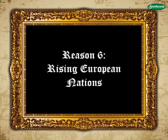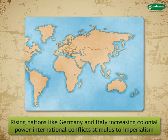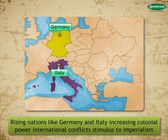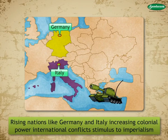Reason 6 — Rising European Nations: Inspired by England, rising nations like Germany and Italy also started aggressively increasing their colonial power, leading to international conflicts and thus adding stimulus to imperialism.